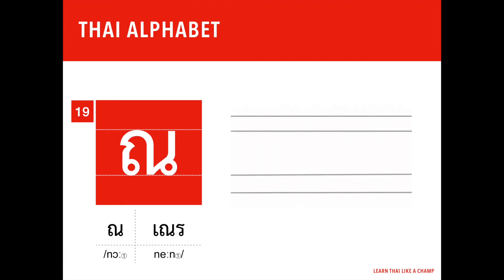Now it's time to write Nå Nên together. Start with a circle at the bottom, go clockwise and then go up, make a little notch, go to the right, and then go down, then a sharp angle, go to the right, make an inner circle, and then go up.